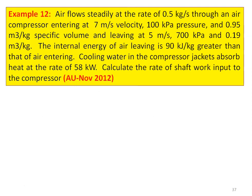Example number 12: air flows steadily at a rate of 0.5 kilograms per second through an air compressor, entering at 7 meters per second velocity, 100 kilopascal pressure, and 0.95 meter cube per kilogram specific volume, and leaving at 5 meters per second, 700 kilopascal, and 0.19 meter cube per kilogram. The internal energy of the air leaving is 90 kilojoules per kilogram greater than that of the air entering. Cooling water in the compressor jacket absorbs heat at 58 kilowatts. Calculate the rate of shaft work input to the compressor. This is from the November 2012 question paper.